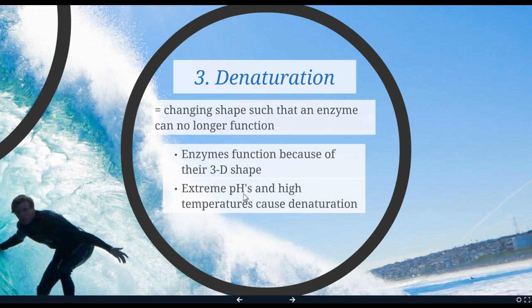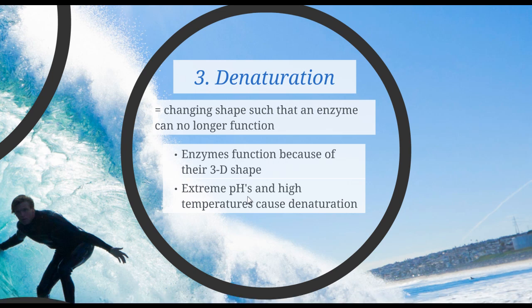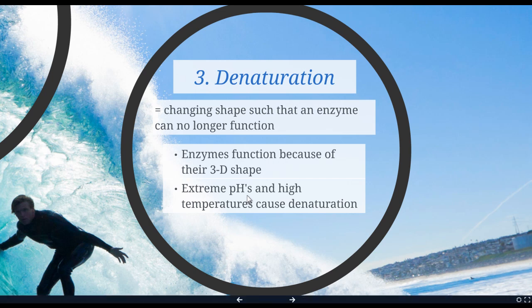Extreme pHs can do the same thing. Something very acidic can kill living cells because it's denaturing all of the enzymes — now you can't control the chemical reactions in that cell and the cell dies. Very basic solutions have the same effect. Cold temperatures, however, are not on this list. Dropping the temperature means molecules aren't moving around as quickly, reducing the rate of chemical reactions, but cold temperatures don't actually change the three-dimensional shape, so they do not cause denaturation.